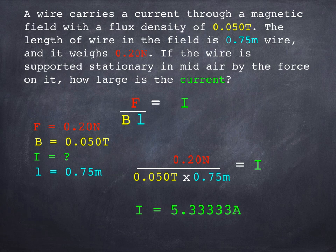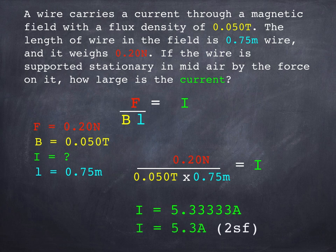As you can see, when we put those numbers in, we get a current value of 5.333333 recurring amps. That's fine, but we also have to think about significant figures. Now if you look at the information in the question, everything we've been given is to two significant figures. That means our answer really should be to two significant figures as well. So if we round it to two sig figs, we're going to get 5.3 amps.